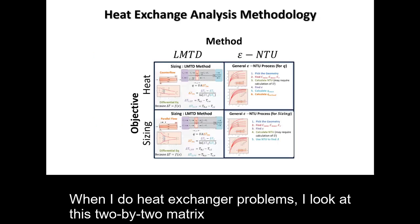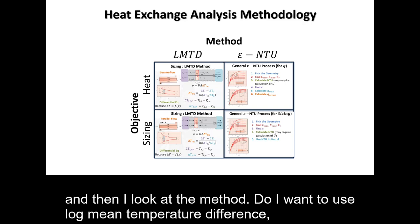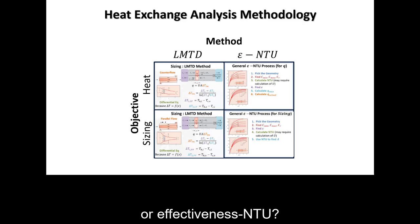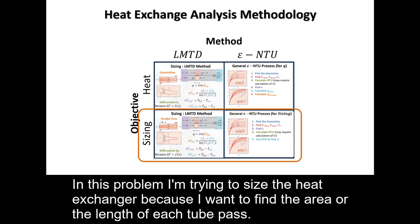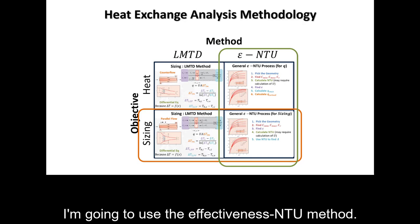When I do heat exchanger problems I use a 2x2 matrix to find the objective — whether I'm sizing the heat exchanger or finding the amount of heat transfer — and then I choose the method: log mean temperature difference or effectiveness-NTU. In this problem I'm sizing the heat exchanger to find the area or length of each tube pass. Because it's not a simple counter flow or parallel flow heat exchanger, I'll use the effectiveness-NTU method.